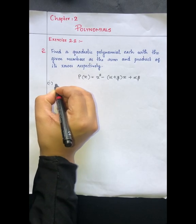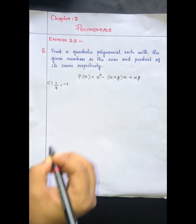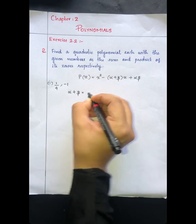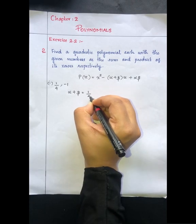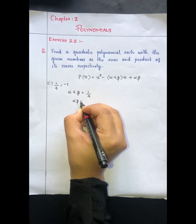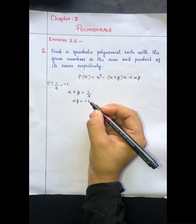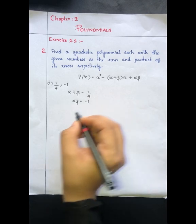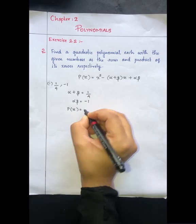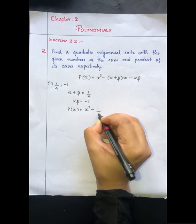First sub-question: the values are 1/4 and minus 1. So the sum of zeros, alpha plus beta, is equal to 1/4. And alpha into beta is equal to minus 1. We substitute these values into the polynomial equation: p(x) = x² minus (alpha plus beta) into x, that is 1/4 times x.